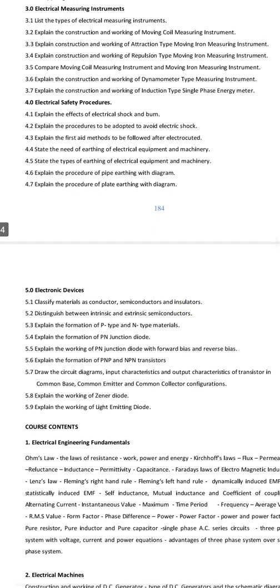The important questions from Chapter 5 are: Explain the working of PNP and NPN transistors; Explain the formation of PNP and NPN transistors — these are very high priority. Next: Explain the working of PN junction diode with forward and reverse bias. The PN junction diode is explained with forward bias and reverse bias characteristics.